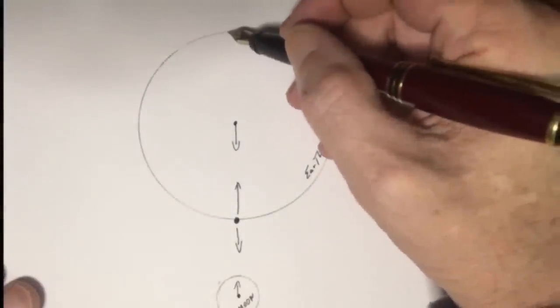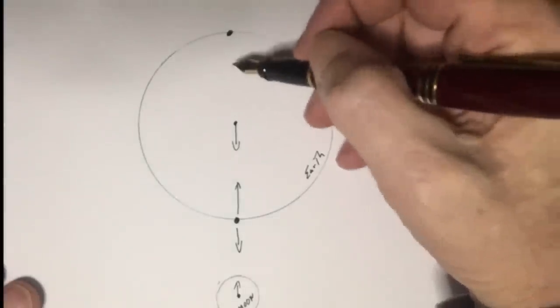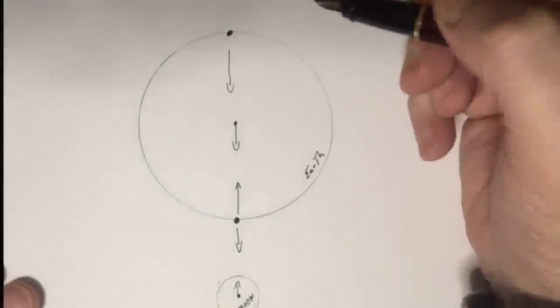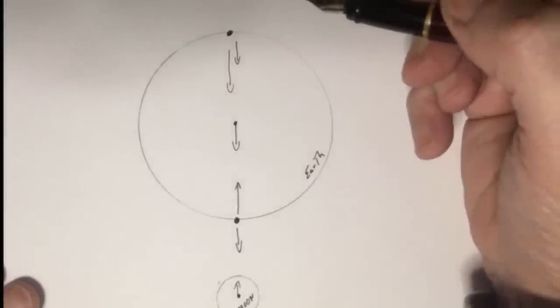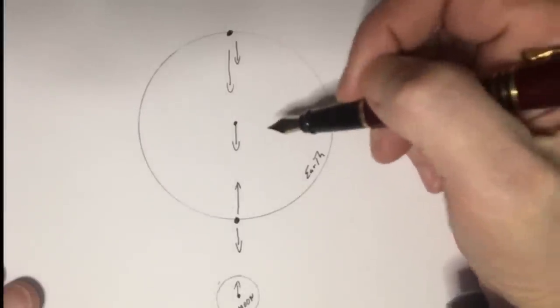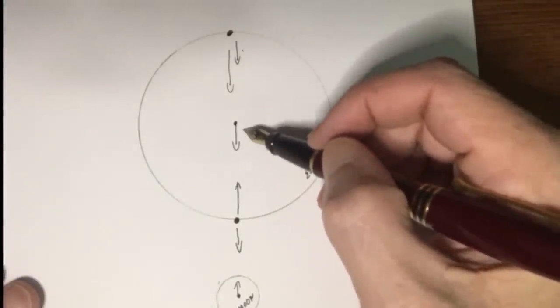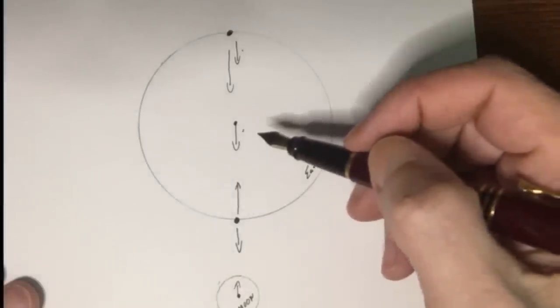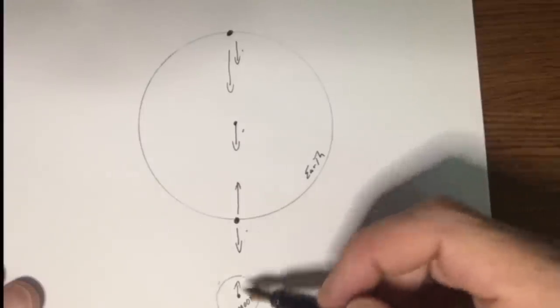Now, likewise, if we look at a spot on the far side of the Earth, that too will have gravitational force going to the center of the Earth and it will have a small amount of gravitational force going to the Moon. This gravitational force going to the Moon will be less than that from the center of the Earth and considerably less than from the surface of the Earth on the side of the Moon.